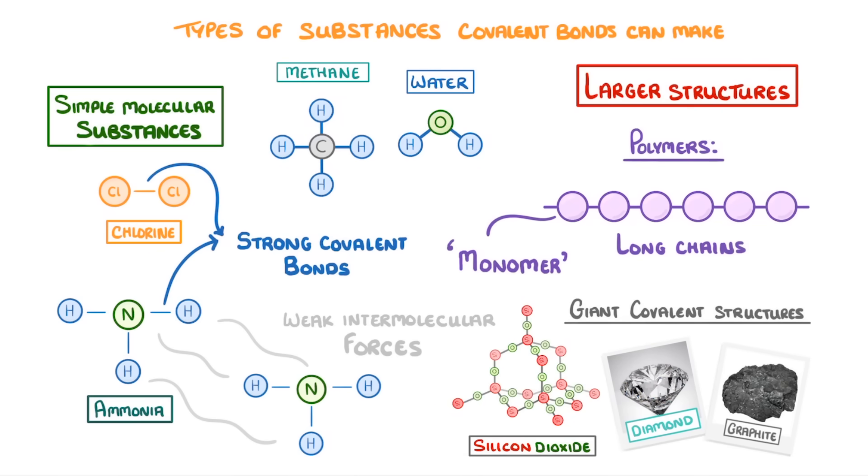which can involve billions or trillions of atoms, arranged in a regular lattice. And because all of the atoms are joined by covalent bonds, they're really strong.